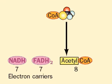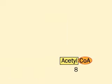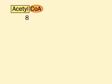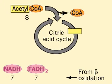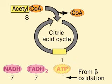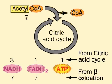Let's put the electron carriers aside for now and look at the fate of the acetyl-CoAs. Each acetyl-CoA enters the citric acid cycle, and each turn of the cycle produces three NADHs, one FADH2, and one ATP via GTP.